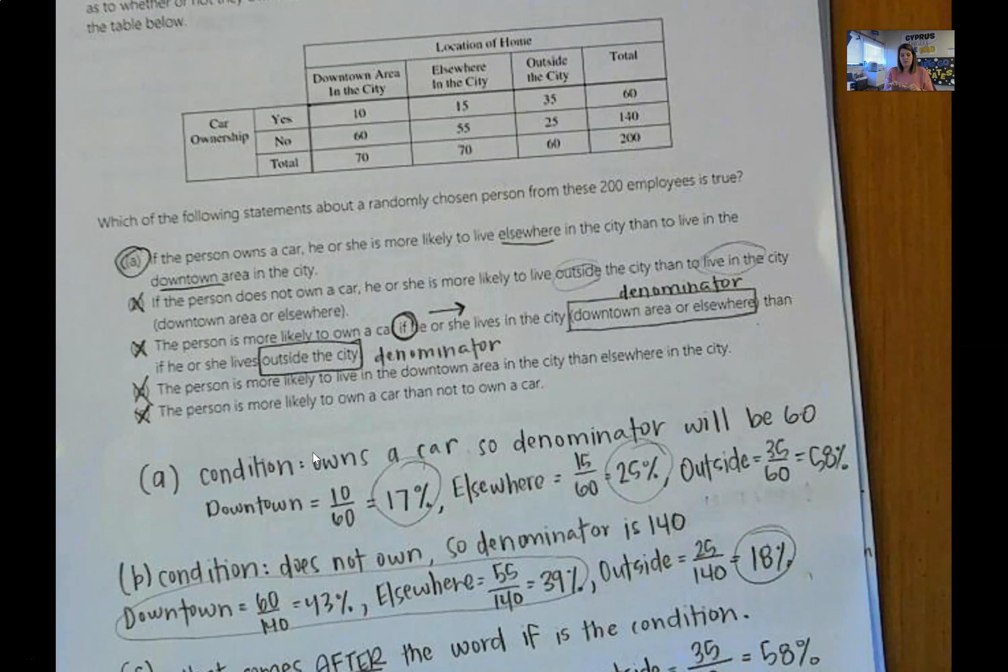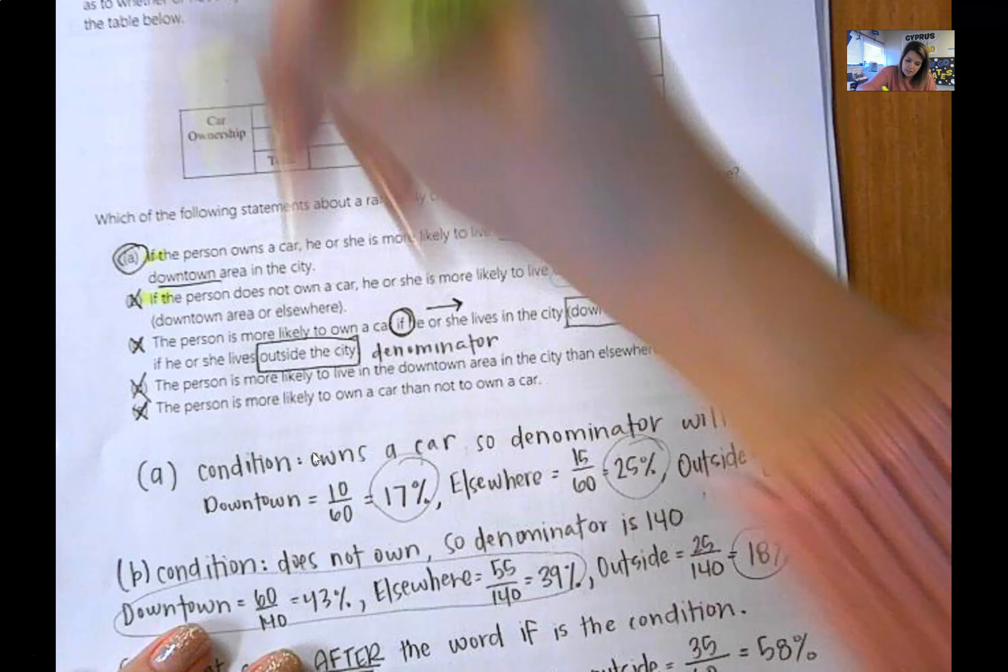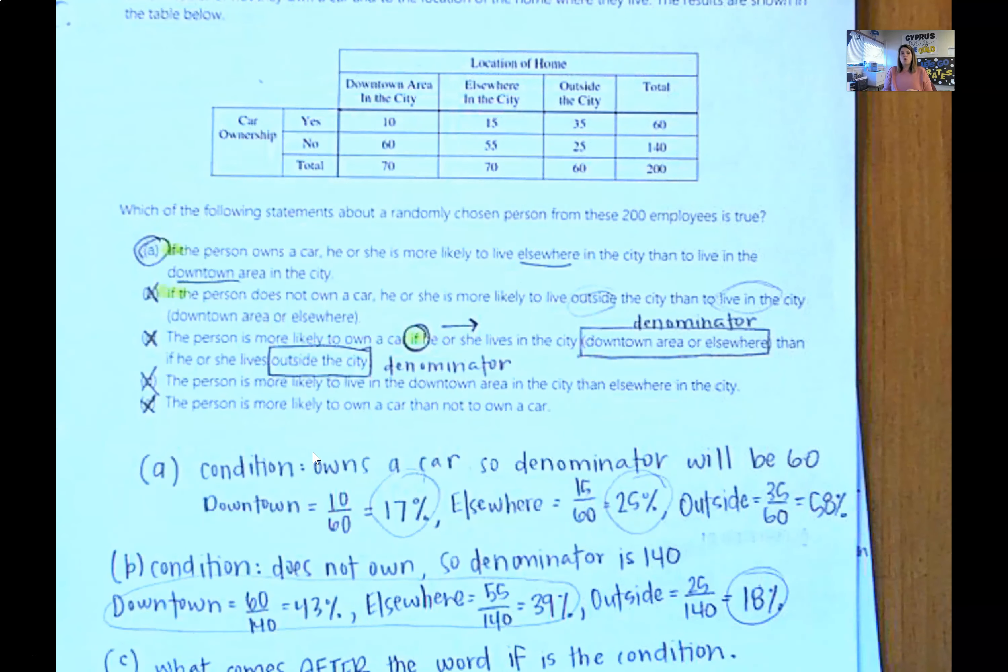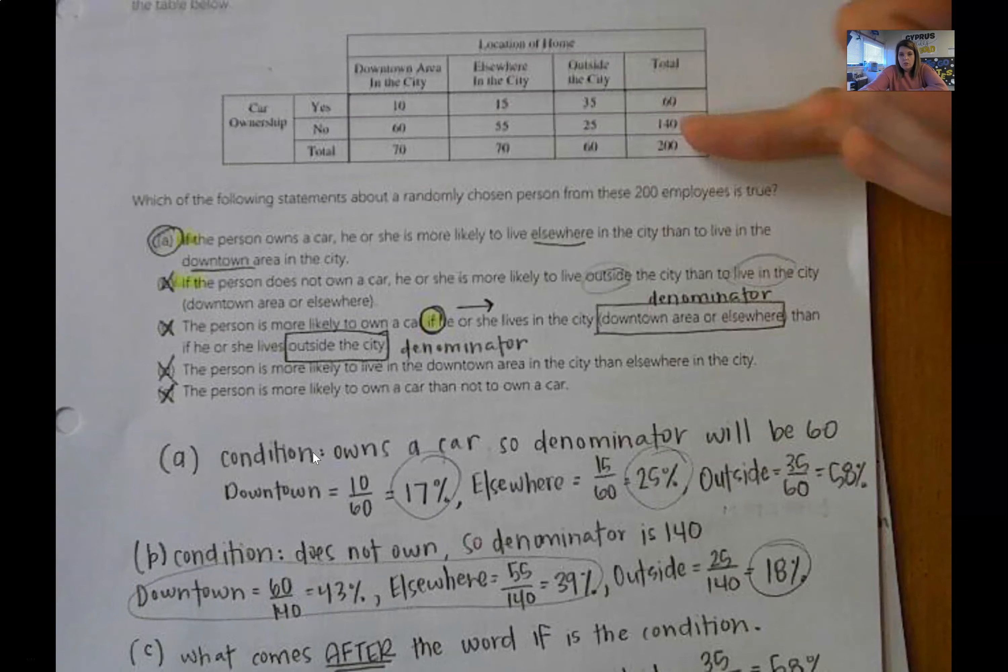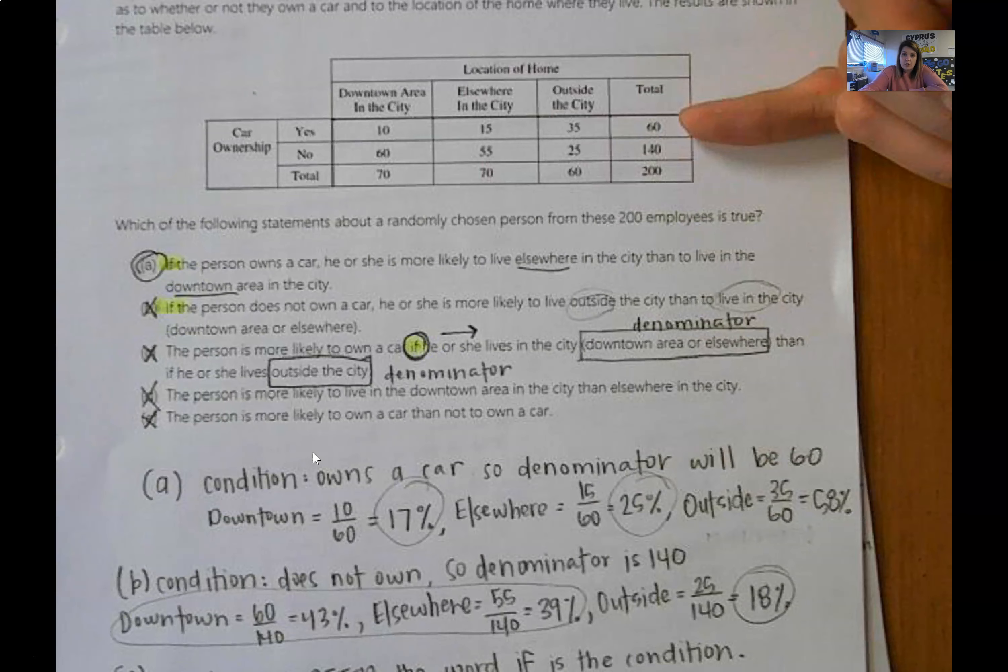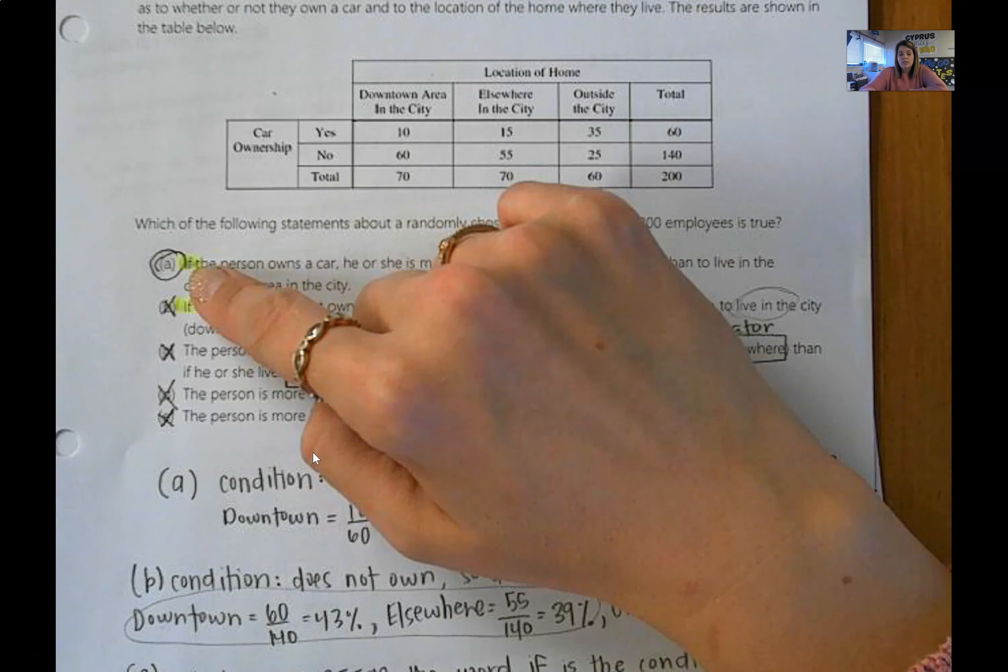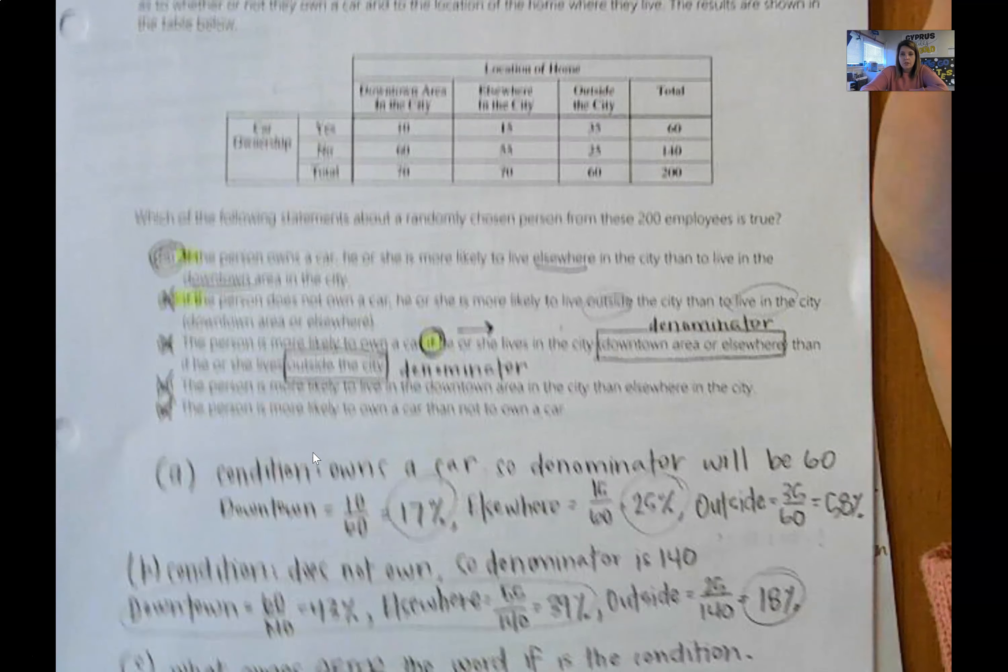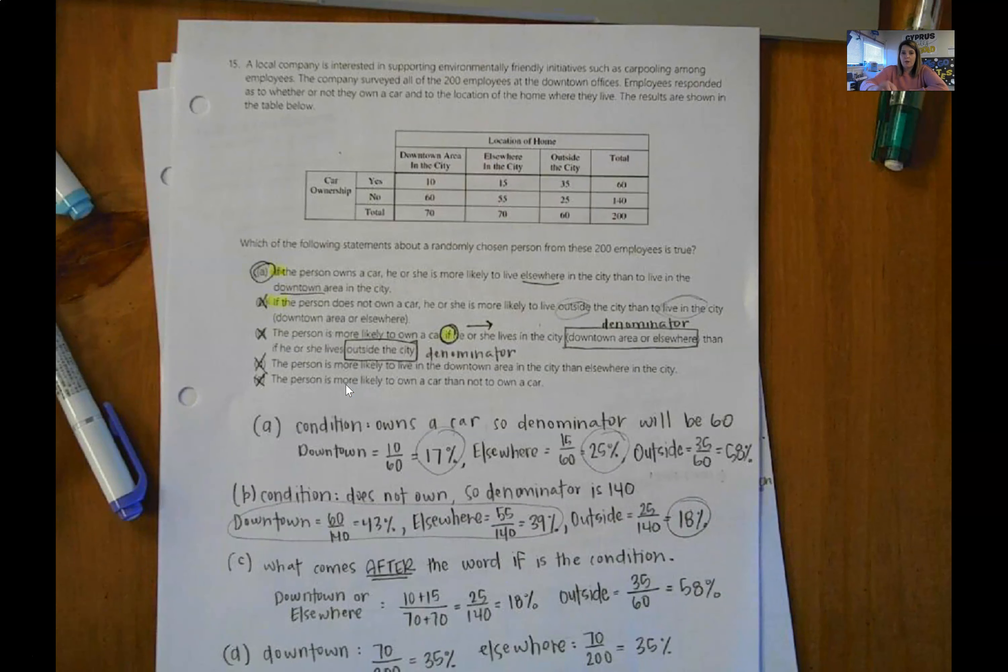So one of the biggest takeaways from this is that the word if tells you you need to change your denominator. Change it from what? The total. In a two-way table, you can use the table total or the category total. When you see the word if, that means that you need to use a category total. If you don't, that means use the table total. So I know that this problem is probably the most complicated problem on the paper.